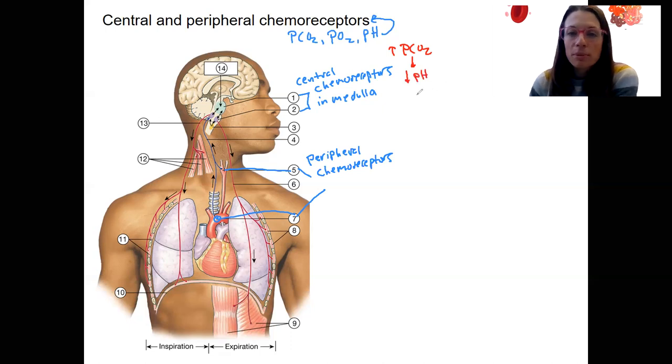pH is primarily the thing detected in the medulla. This is inside the brain. The brain is very sensitive to changes in pH, so that's the first, the quickest, 70% of our carbon dioxide response is from this mechanism.